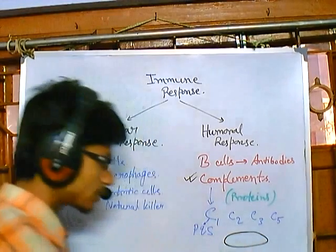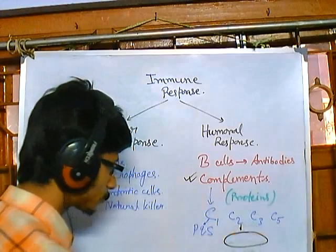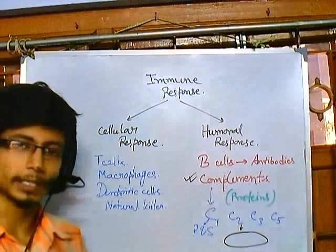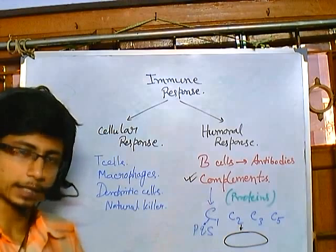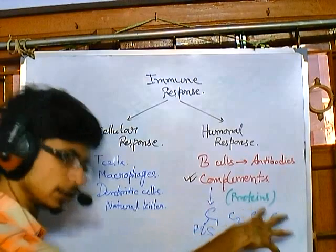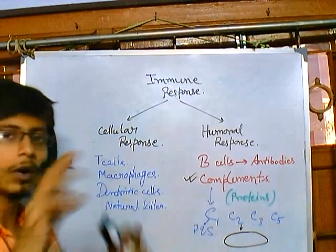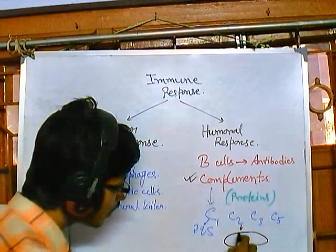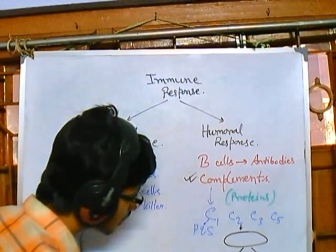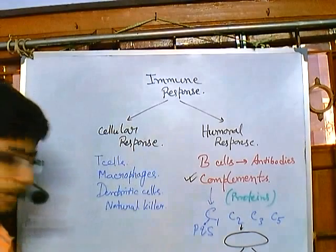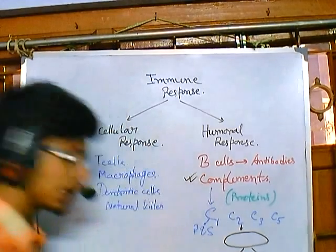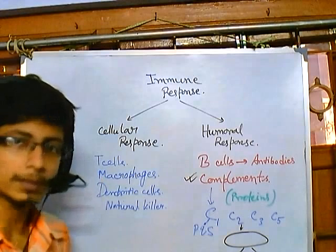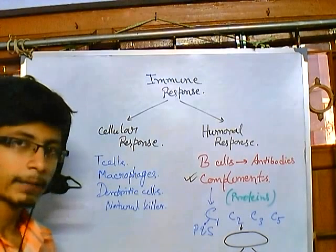For example, take a complement like C2. This complement is a multimeric or multi-subdomain structure. When we cleave it, we generate two different parts. The smaller part is called the A segment and the larger part is called the B segment. So the larger part is always B and the smaller part is always A, for most cases.